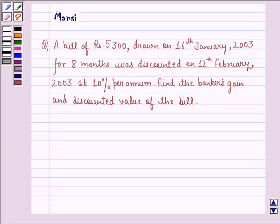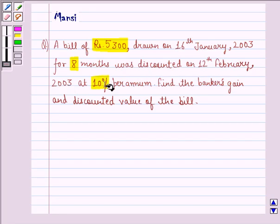Hi and welcome to the session. Let's work out the following question. A bill of rupees 5300 drawn on 16th January 2003 for 8 months was discounted on 12th February 2003 at 10% per annum. Find the banker's gain and discounted value of the bill.